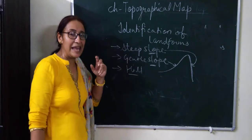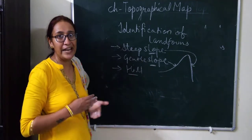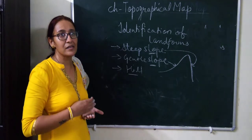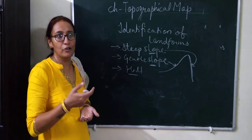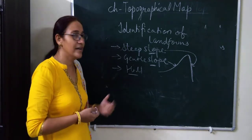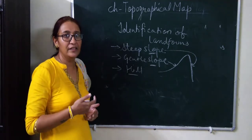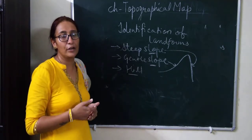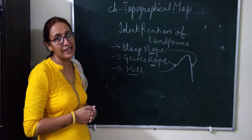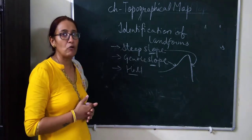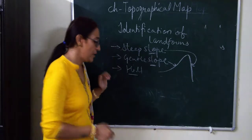A hill is an elevated area above sea level. The difference between a mountain and a hill: an elevated area of less than 600 meters is considered a hill, whereas an elevated area of 600 meters or more is considered a mountain. Both are elevated areas, but a hill is shorter than a mountain.